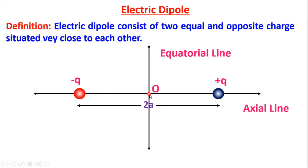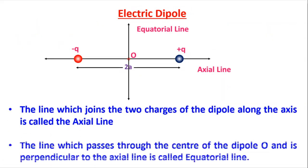This is called the axial line. The second important line passes through the center of the dipole at 90 degrees — this is called the equatorial line. So, the line which joins the two charges of the dipole along the axis is called the axial line. The line which passes through the center O and is perpendicular to the axial line is called the equatorial line. It always passes through the center O.